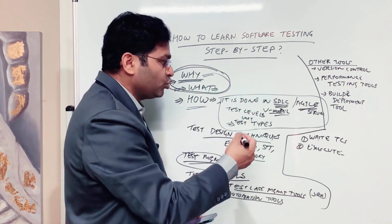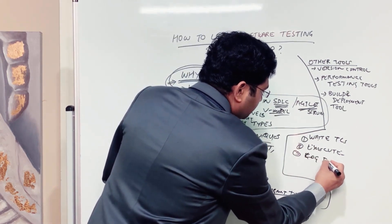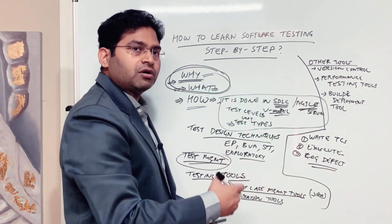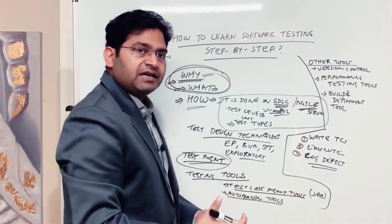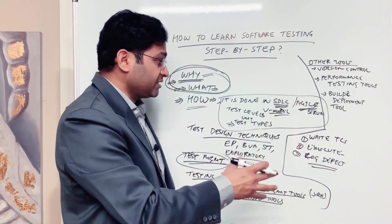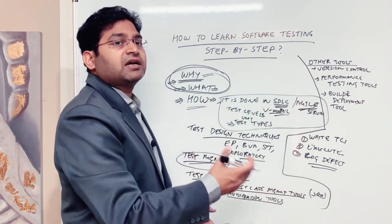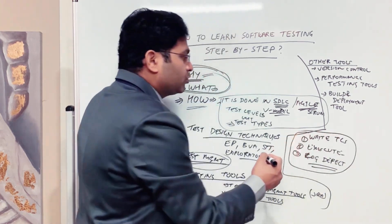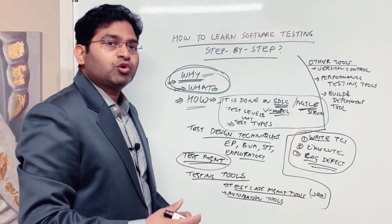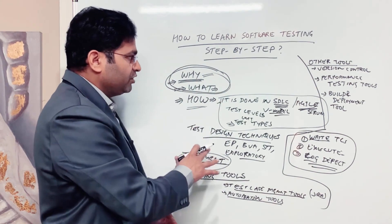Deliberately fail a test case and raise a defect. When you log the defect in the tool, you learn what key details go into the defect template. This gives you the full life cycle: you write a test case, create a test cycle, add the test case to it, execute it, fail it, log the defect, and assign it to a developer. Practicing this life cycle in the tool gives you far more confidence than just reading concepts.